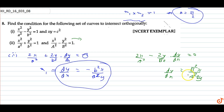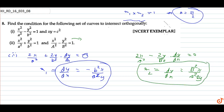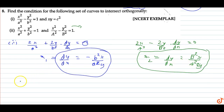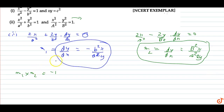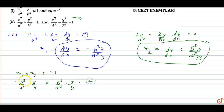Now M1 into M2: multiplying the two slopes gives minus b-square upon small a-square into x upon y, times capital B-square upon capital A-square into x upon y. The two negatives cancel, and this must equal minus 1.